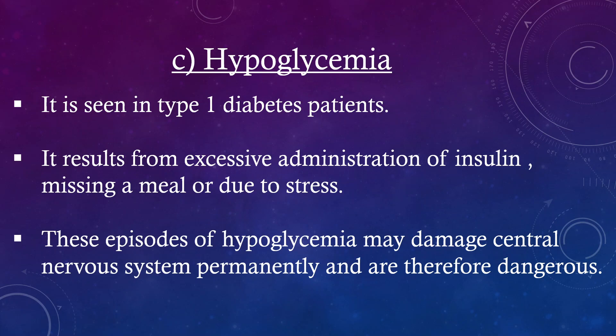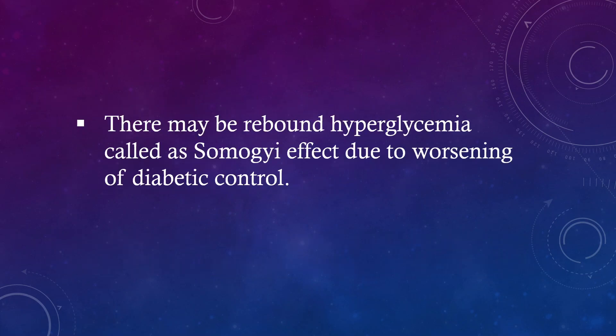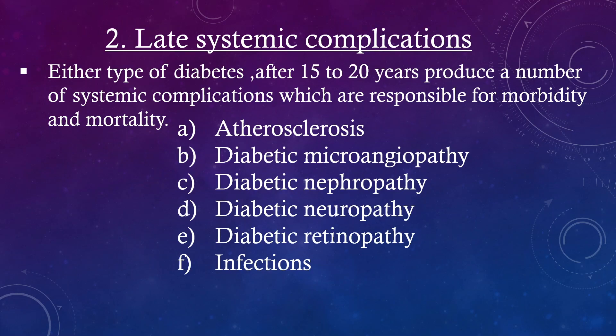These episodes of hypoglycemia may damage the central nervous system permanently and are therefore dangerous. There may be rebound hyperglycemia called the Somogyi effect, due to worsening of diabetic control. Late systemic complications: either type of diabetes over 15 to 20 years produces a number of systemic complications responsible for morbidity and mortality, including atherosclerosis, diabetic microangiopathy, diabetic nephropathy, diabetic neuropathy, diabetic retinopathy, and infections.